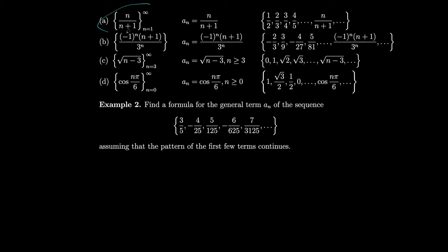For our next sequence, we have (−1)^n times (n+1) over 3^n. The (−1)^n alternates the sign of each term: if n=1, then (−1)^1 is just −1, but if n=2 or any even number, (−1)×(−1) becomes positive. So every odd term is negative and every even term is positive. Then the rest is similar — you just plug in n and see what term you get.